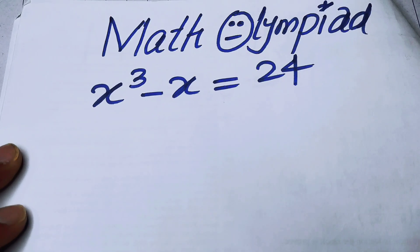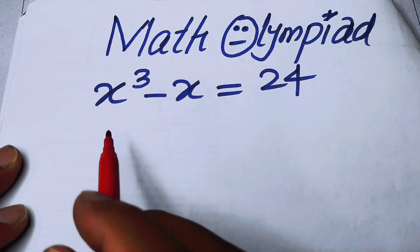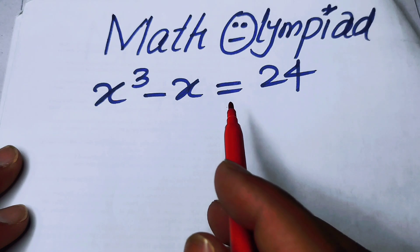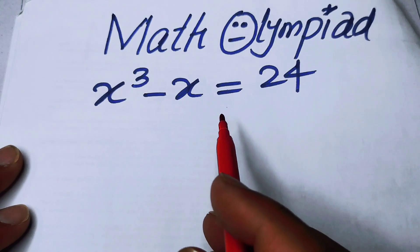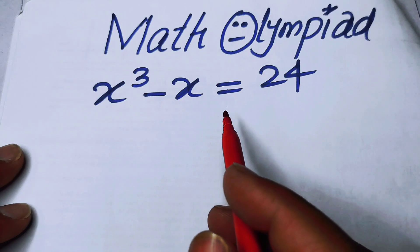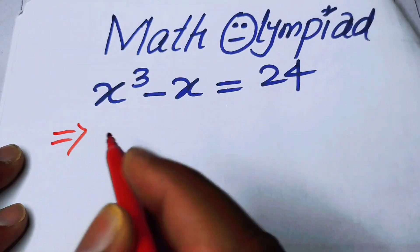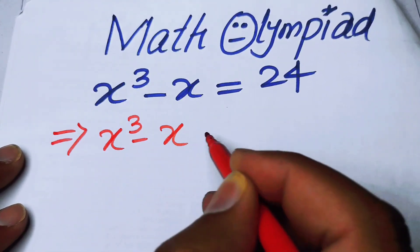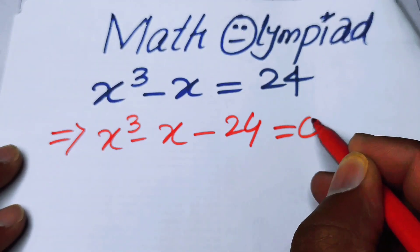Hello everyone, welcome back to the Map of Mathematics. In this video we are going to solve this nice algebra problem: x cubed minus x is equal to 24. We will solve this problem for the value of x. The very first thing we are going to do is move 24 to the left hand side, so the expression becomes x cubed minus x minus 24 is equal to 0.